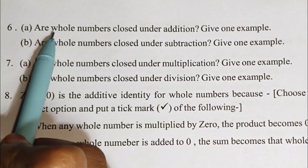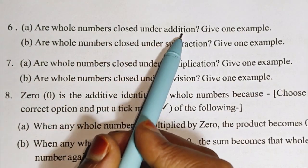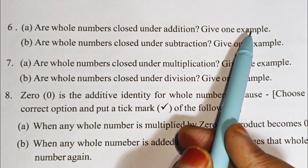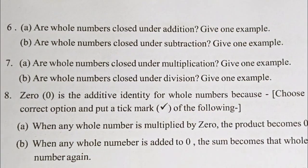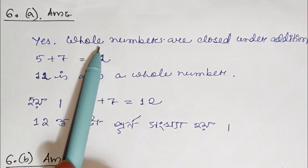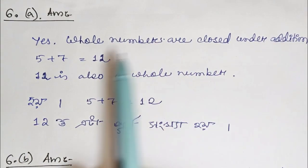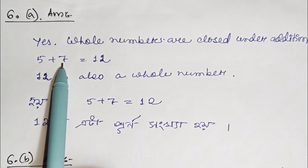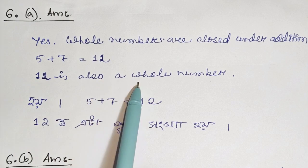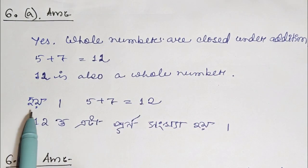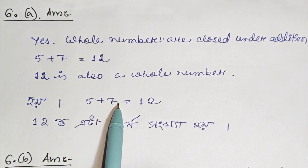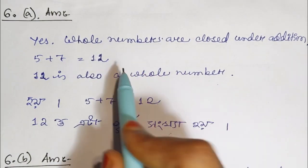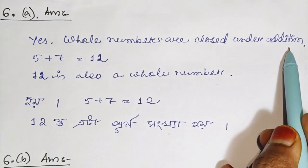Question number 6a: Are whole numbers closed under addition? Give one example. The answer is yes. Whole numbers are closed under addition. For example, 5 plus 7 equals 12. Here 12 is also a whole number. So whole numbers are closed under addition.